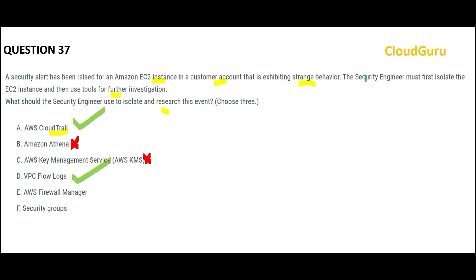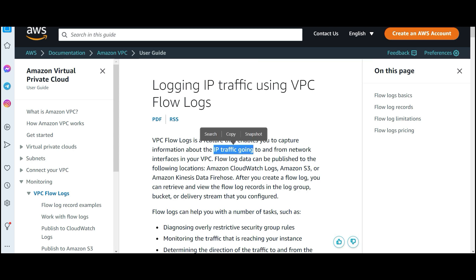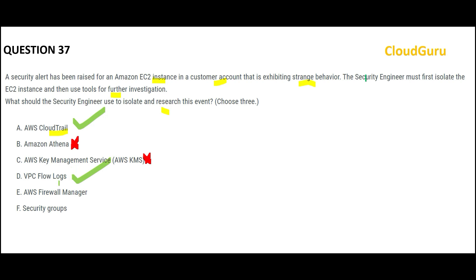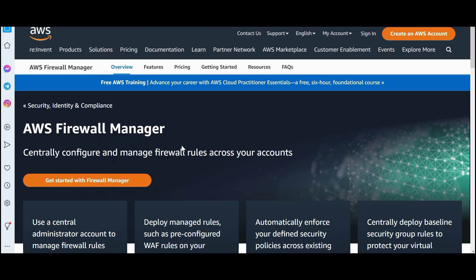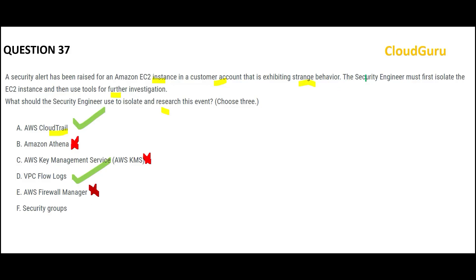We will definitely look at VPC Flow Logs — it captures information about incoming and outgoing IP traffic — that is my second answer. Option E, Firewall Manager, talks about firewall rules, but we may not need to inspect that first, so it is wrong. Security Groups are my third answer: we will deny access to all connections to and from the EC2 instance. We will look at which IPs were whitelisted, stop access for people who were already connecting, and stop the EC2 instance from scanning other instances.